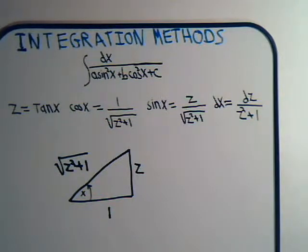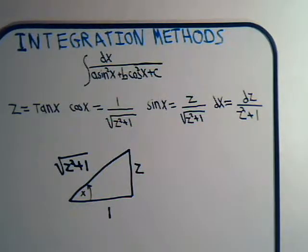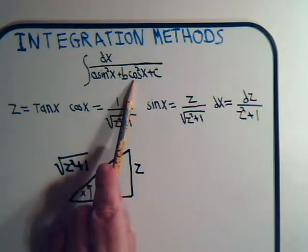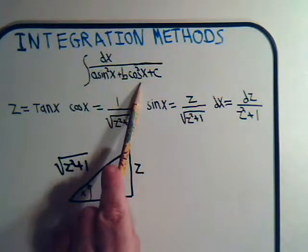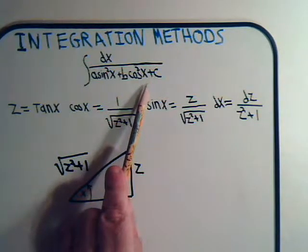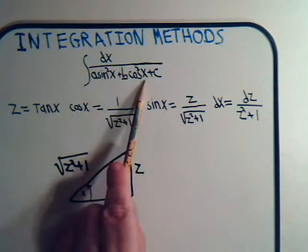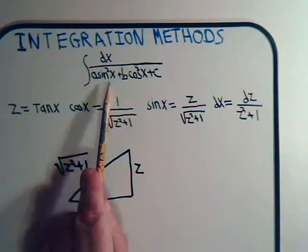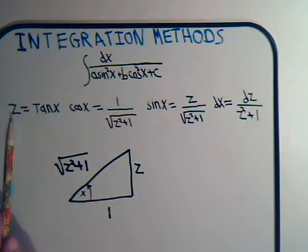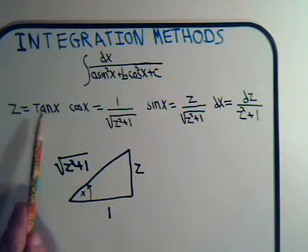In this video we want to introduce an integration technique that comes in very handy when trying to integrate different types of rational trig functions of the form where we have sine squared of x plus cosine squared of that same angle multiplied by respective coefficients plus a constant. The technique is: whatever this variable happens to be, we introduce a new variable by saying let z equal the tangent of x.